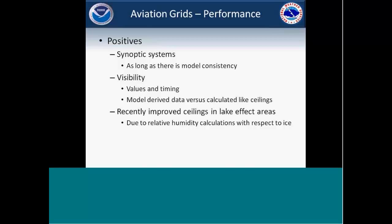Some of the positives we've seen with the aviation grids: it does really well with synoptic systems, especially when there's model consistency. If there isn't model consistency, that's when it gets shaky. The visibility — both in actual values and timing — has been doing really well. A lot of that has to do with the data coming from derived data or directly from the models, instead of calculating it like we do with the ceiling. We did make changes with RH with respect to ice to improve the ceilings in the lake effect areas, and that especially helped for Houghton.